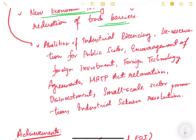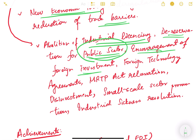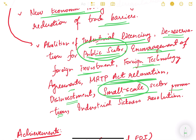The Industrial Policy of 1991 abolished industrial licensing — previously there was a lot of licensing and permit raj which was now abolished. De-reservation of public sector industries took place — many sectors reserved only for public sector enterprises, such as cement manufacturing, were now opened to the private sector. Encouragement of foreign investment came through attractive policies. There were also provisions relating to the MRTP Act, disinvestment, small scale sector promotion, and industrial sickness resolution — providing exit plans for sick units in both government and private sectors.